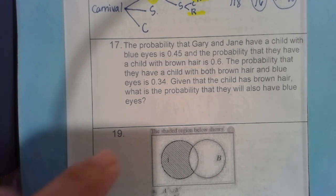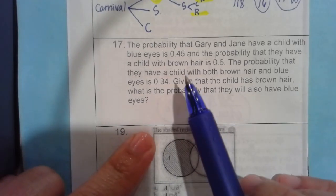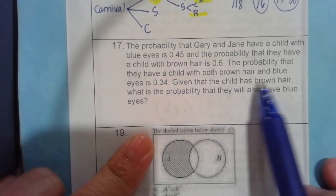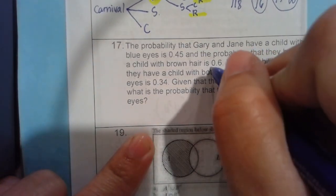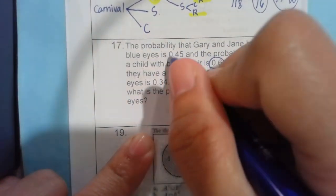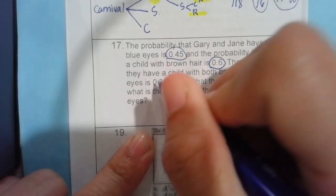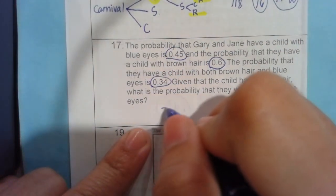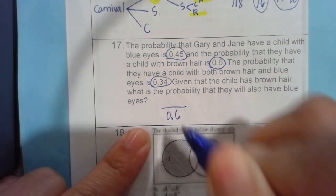Alright. This is given. Given meaning we're expecting that this would be your denominator. This is given that the child has brown hair. Brown hair here is 0.6.